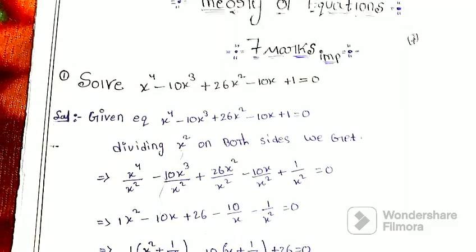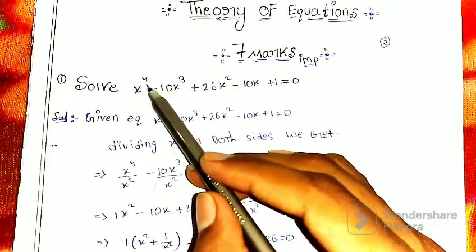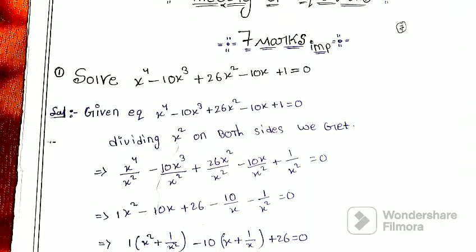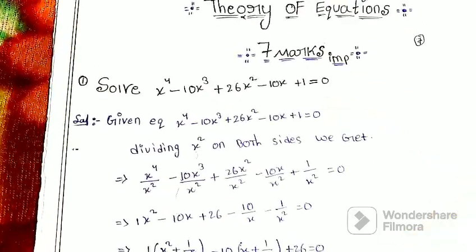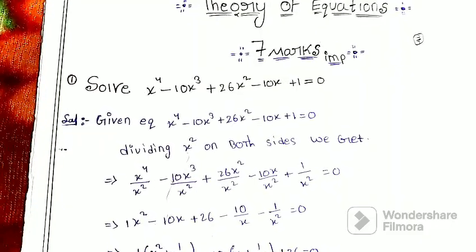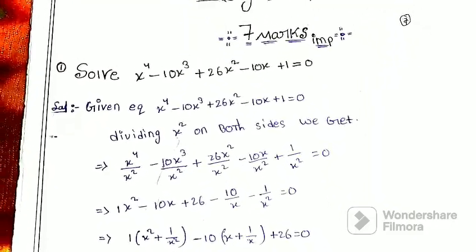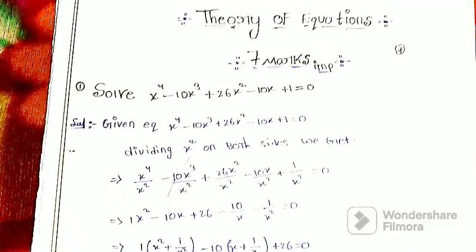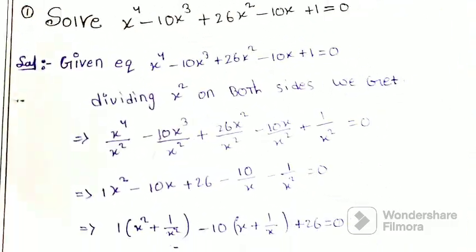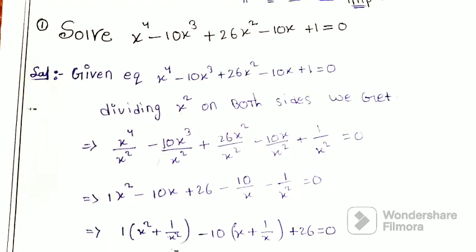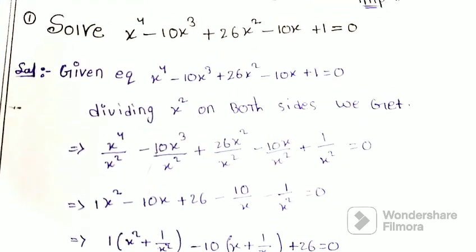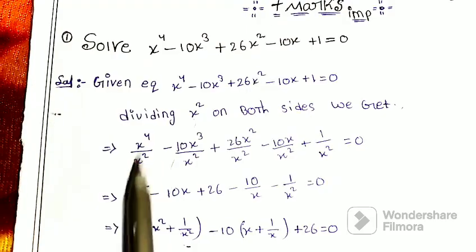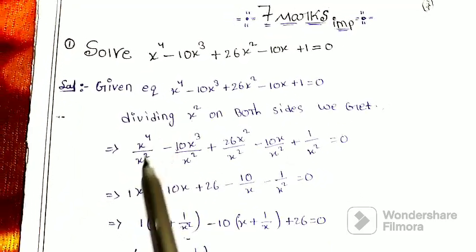The coefficients are the same as the highest coefficient at x power 4. The highest power is 4. So we divide the entire equation by x squared — dividing x squared on both sides.